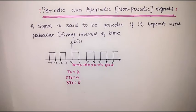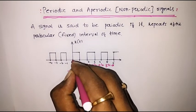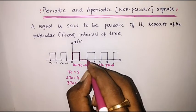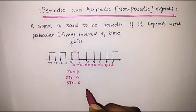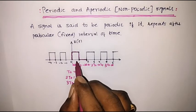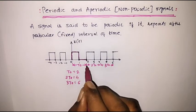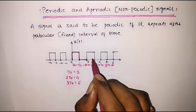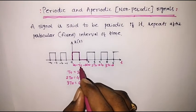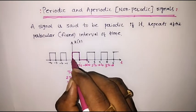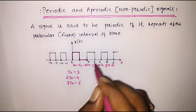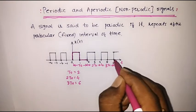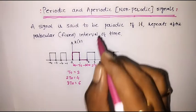Now here we can observe that x of t begins at t equal to 0. It will move like this and this will be the first cycle of x of t. The period of this signal or the width of the first cycle is t0. We can observe that at every t0 the same cycle repeats. At 1t0, that is at t equal to 2, the same cycle repeats, and at 2t0, or t equal to 4, again the same cycle repeats. This kind of signal is known as a periodic signal.